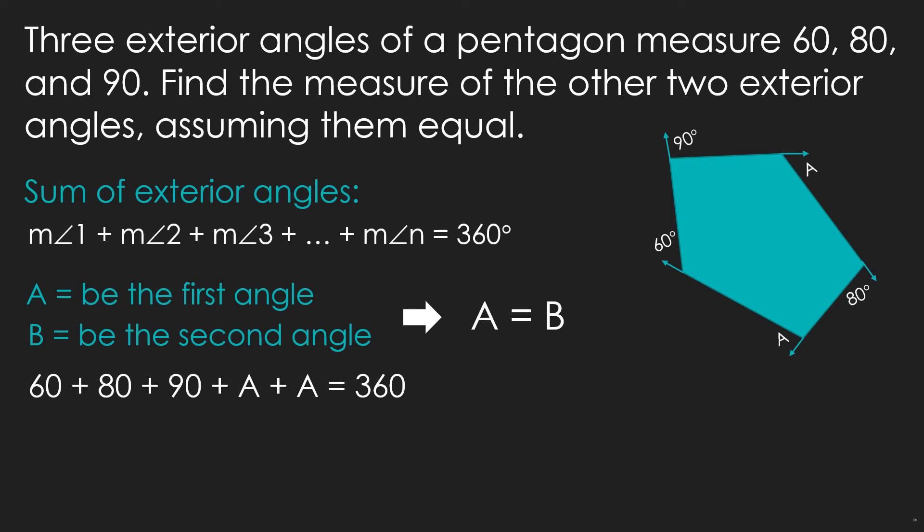Do not forget that at this moment, our main objective is to know what is A, since that represents our unknown exterior angle. So, to simplify our equation, we combine like terms. This is the process we do in algebra, in which numbers are combined and variables are also combined in another group. Now, combining all the numbers will result to 230, and combining the variables will result to 2A. So, the equation now is 230 + 2A = 360.